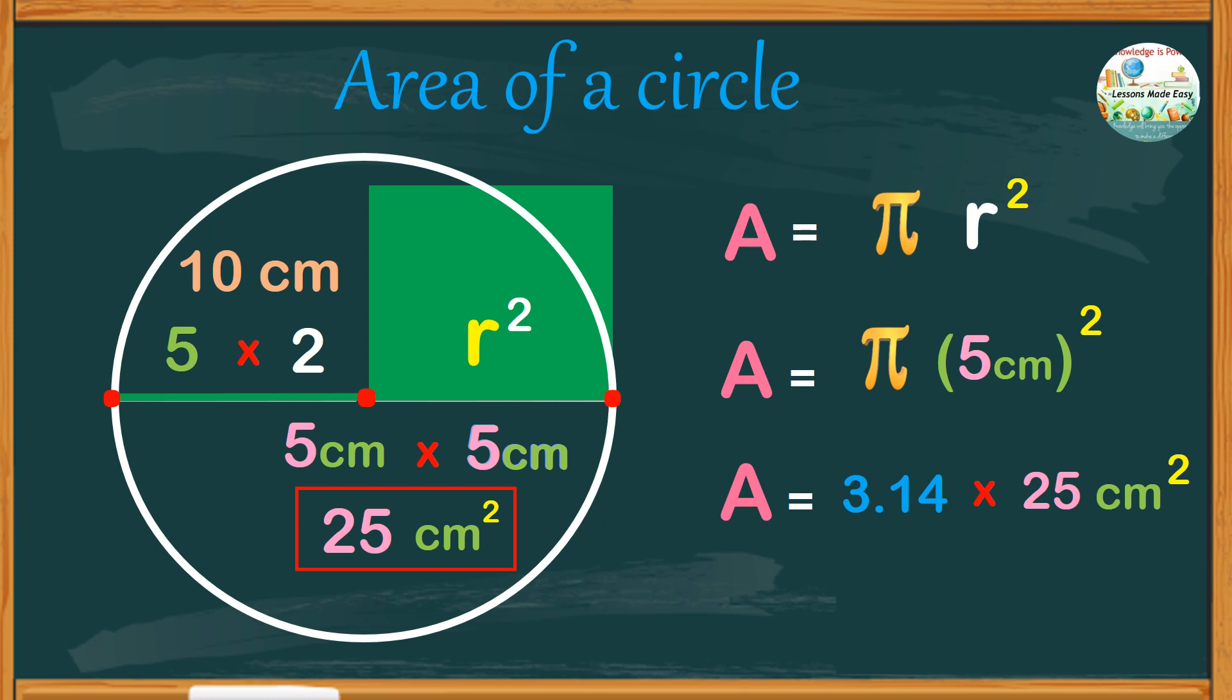Then finally, multiply 3.14 with 25. The final product would be 78.5 square centimeters. So the area of this circle is 78.5 square centimeters.